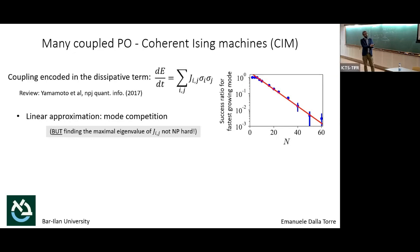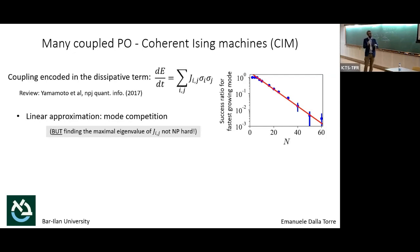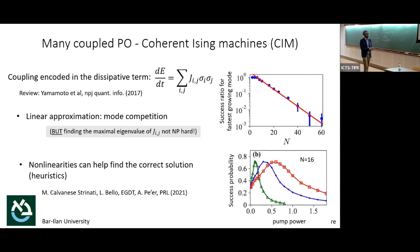It turns out that the mode competition analysis gives a winning mode that sometimes happens to be the Ising solution, but often is not. We computed the probability over an ensemble of many Ising models that the mode competition winner is actually the Ising solution, and it turns out that probability goes down exponentially. So you are solving the Ising model with exponentially small probability — and the NP-hard story still holds.